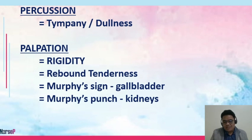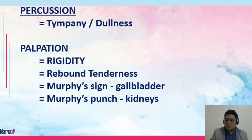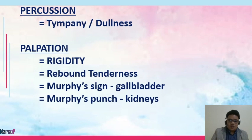Murphy sign evaluates your gallbladder and is common among patients with cholecystitis and cholelithiasis. Murphy sign is considered positive if upon inhalation, the patient feels pain against the examiner's hands placed over the liver borders — the patient feels pain as the liver touches the examiner's hands upon palpation. The Murphy punch is used to assess your kidneys.